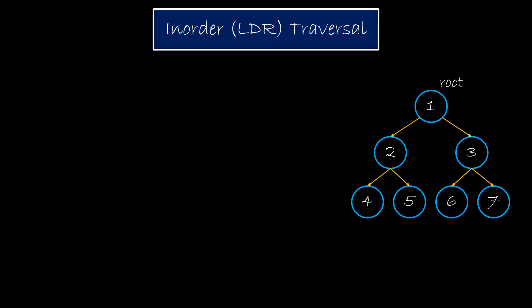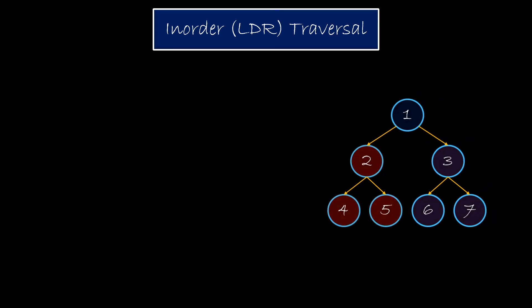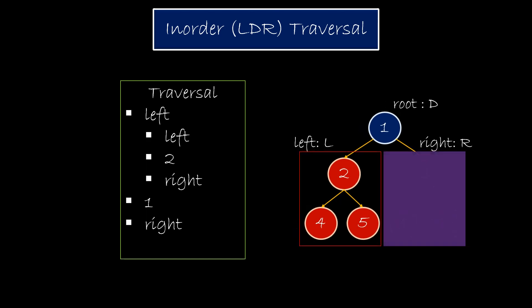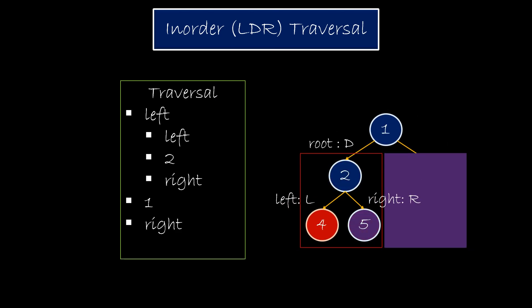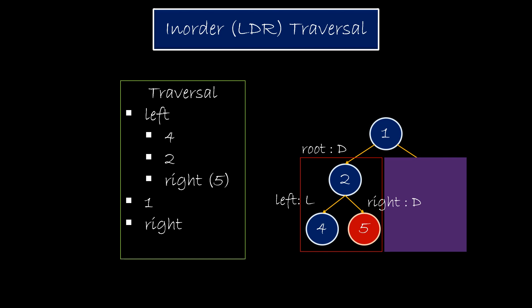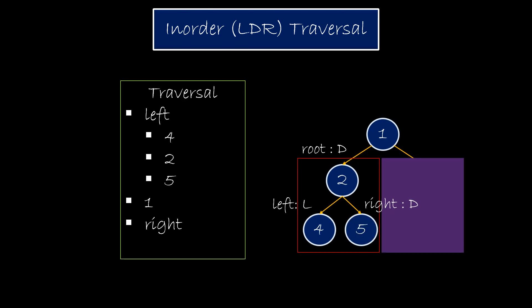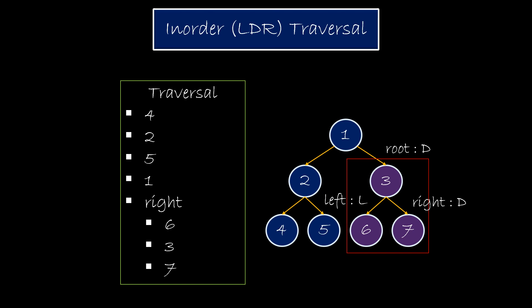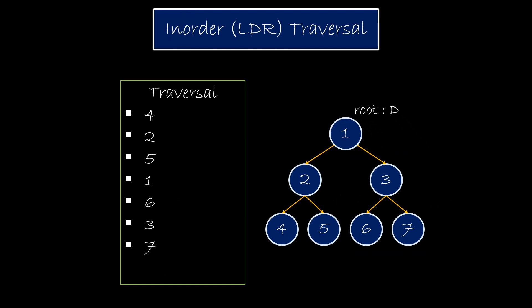Let's first go through the process of traversing a tree using a pen and paper. We know that in-order has root in the middle. So the first step can be writing the broader operation: left, 1, right. We will first substitute the value for left by traversing the left subtree, giving us left, 2, right. If we go to left, we have a single node 4, so we do not go further down. Similarly, right becomes 5. This gives us values for left and root, and now we need to move to right. Doing the same for the right subtree, we get 6, 3, 7. Substituting it, here is our in-order traversal for the tree.